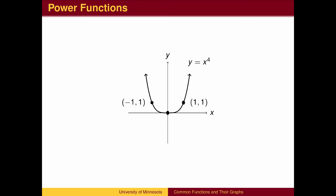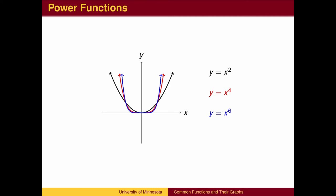All higher even powers of x, like x to the 4th, x to the 6th, etc., look similar to y equals x squared. They all go through the origin and are symmetric with respect to the y-axis. The higher the power, the longer the function stays close to the x-axis and the steeper the graph is beyond x equals 1.